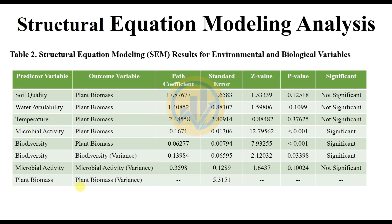This is Table 2 — Structural Equation Modeling results for environmental and biological variables. The predictor variables are Soil Quality, Water Availability, Temperature, and Microbial Activity. The outcome variables, path coefficients, standard error, Z value, P value, and significance value are all presented.